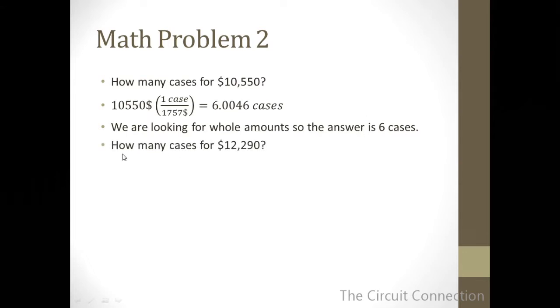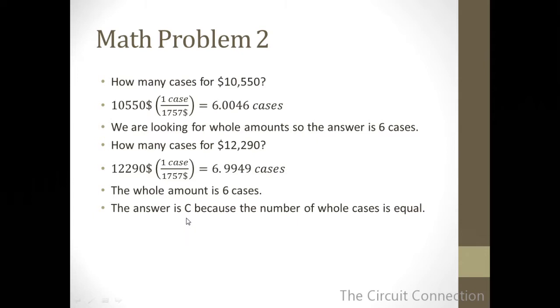Next, how many cases for $12,290? $12,290 times one case per $1,757 equals 6.9949 cases. Again, we are looking for whole numbers, so the answer for this dollar amount is still 6 cases. What does that mean? We have 6 cases here and 6 cases there. So the answer is C because the number of whole cases is equal.